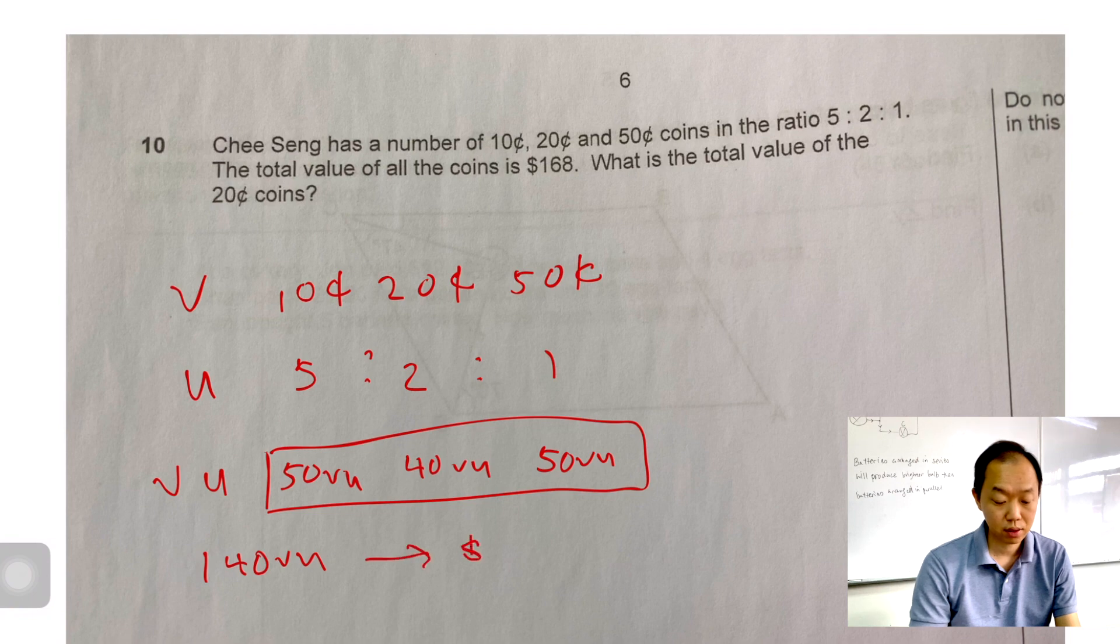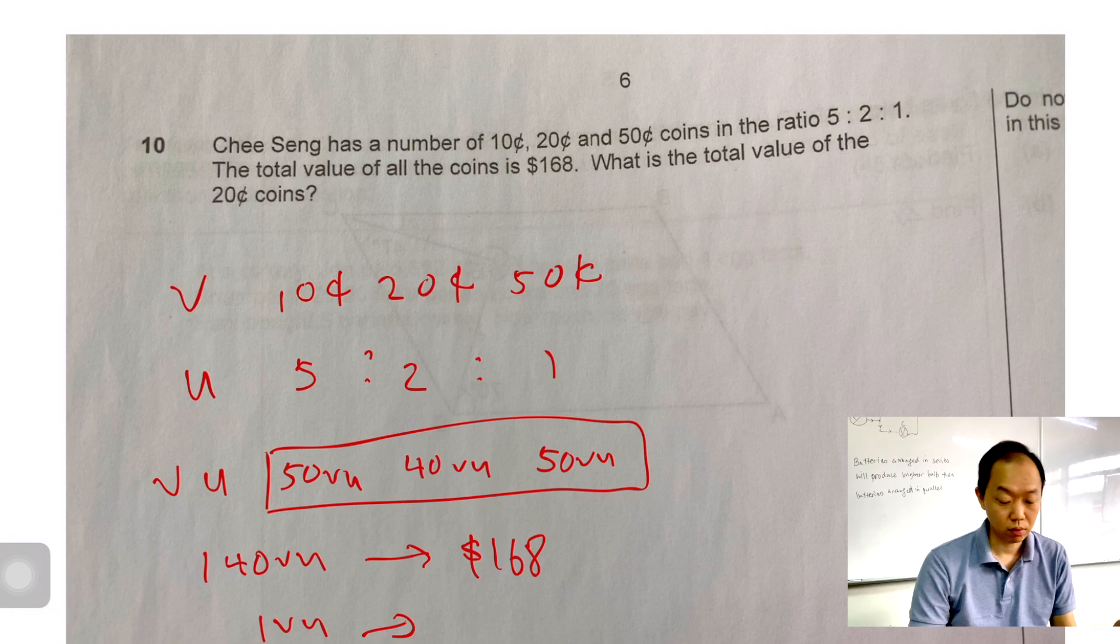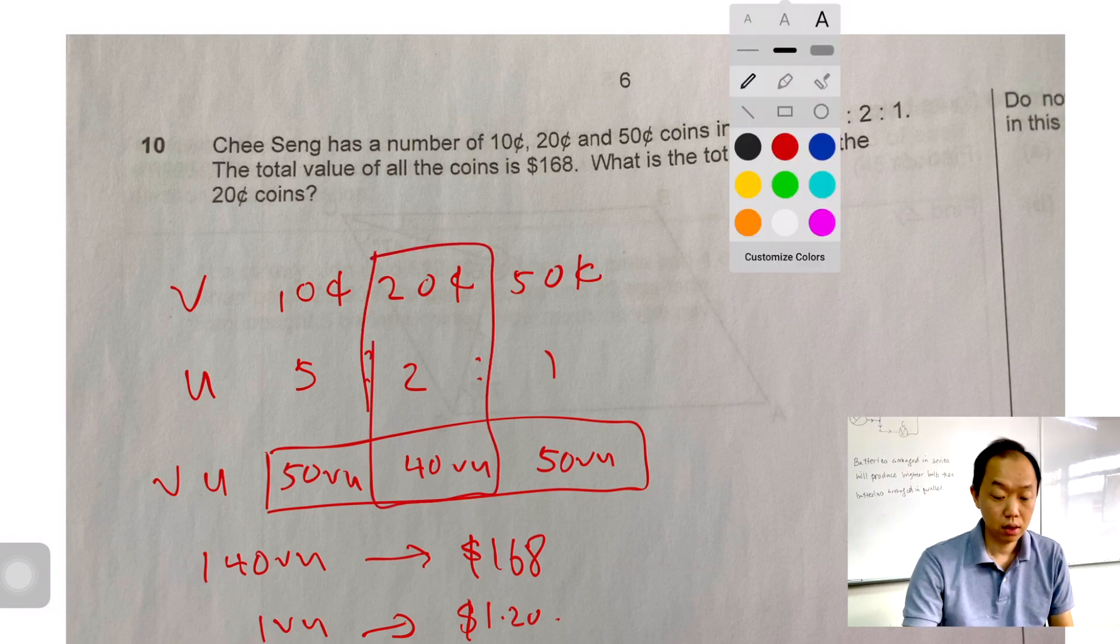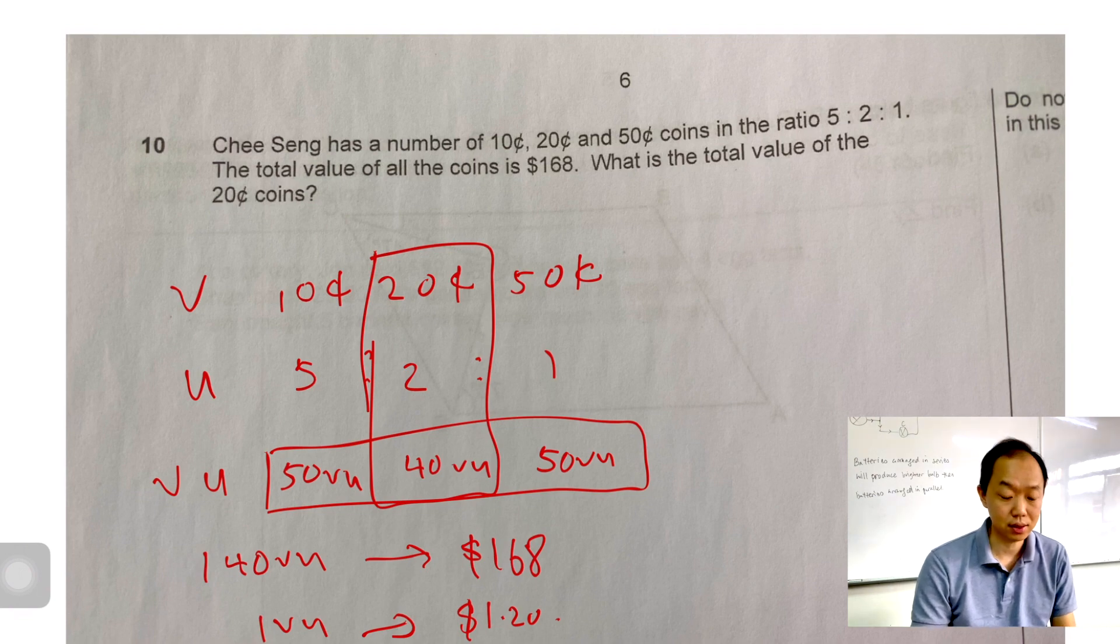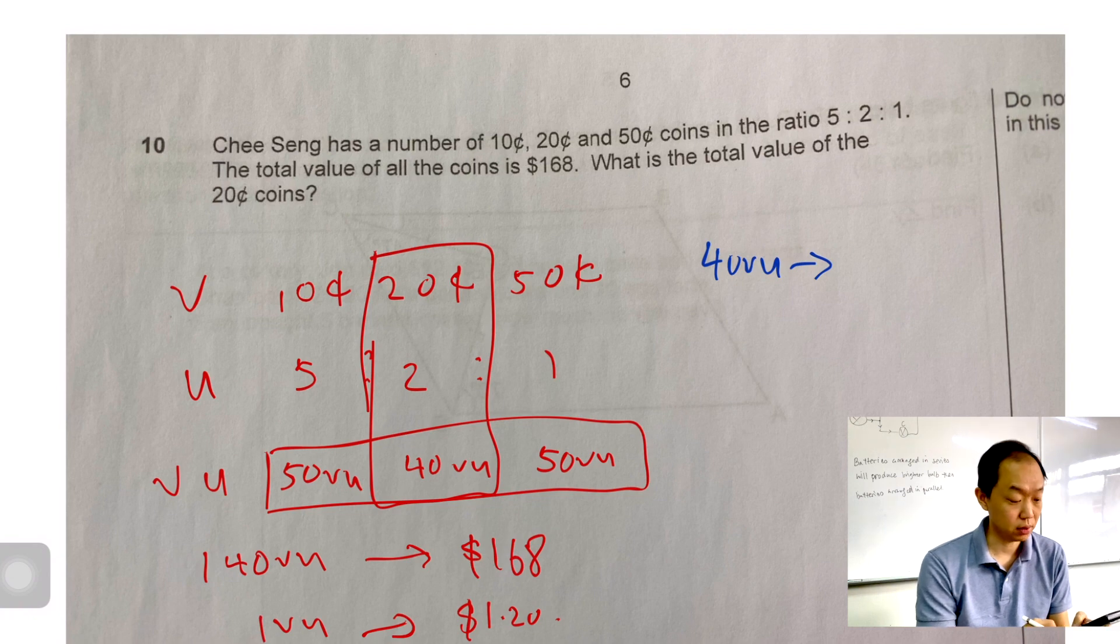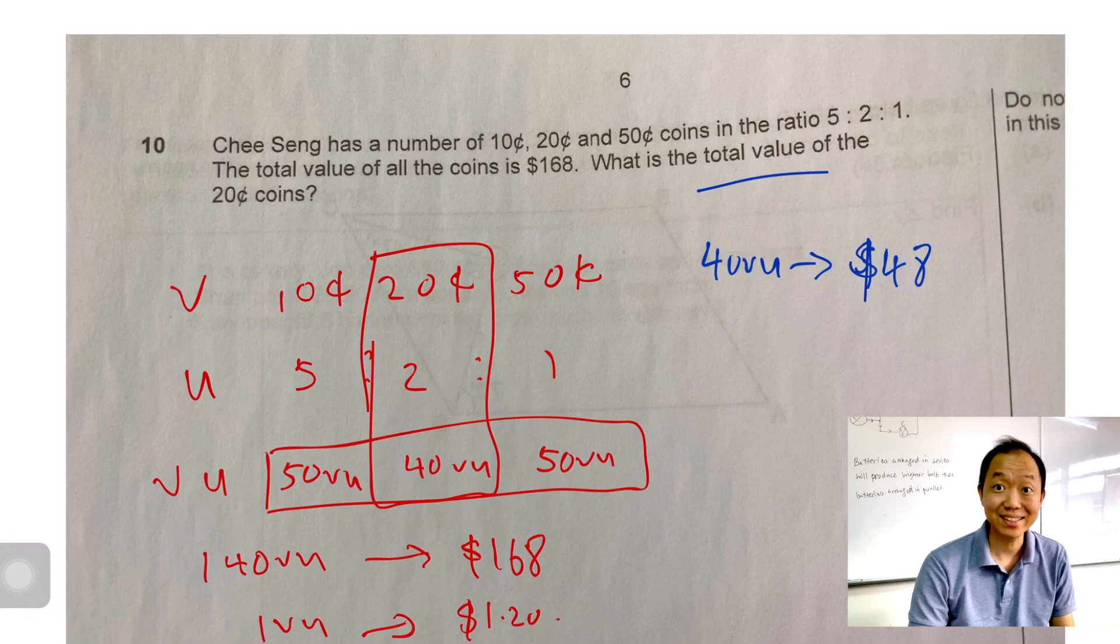And 140 VU represents $168. So now I want to find one VU. We take 168 divided by 140. 1 VU is $1.20. What is the total value of about 20 cents? So I just need to focus on this part. Now since the total value of 20 cents coins is 40 VU, and 1 VU is 120 out of 5, 40 VU is 120 times 40. That will be $48. And yeah, that's it. So that's our answer. $48, 40 VU. So there you go.